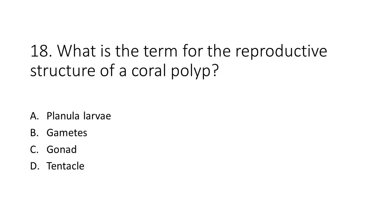Number 18. What is the term for the reproductive structure of a coral polyp? A. Planula larvae. B. Gametes. C. Gonad. D. Tentacle.